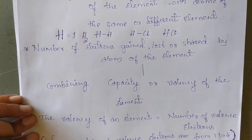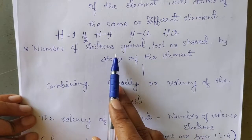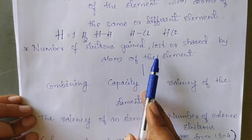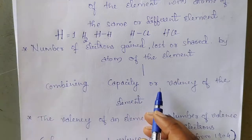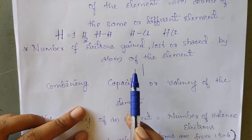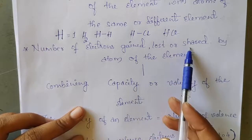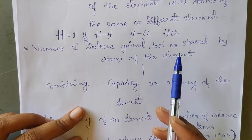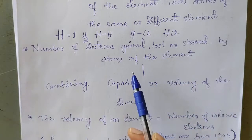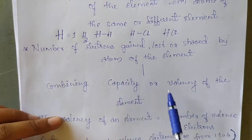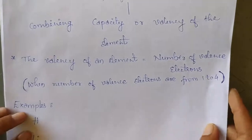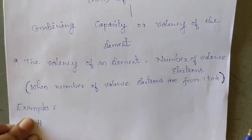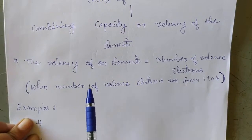We can predict the combining capacity or valency of an element when the number of electrons are gained, lost, or shared by the atom of the element. We can explain when a particular atom of the element will lose, gain, or share its electrons. Then only we can predict or explain the combining capacity or valency of the element. Now we will see how to calculate the valency of an element. There is a formula to calculate the valency of an element.